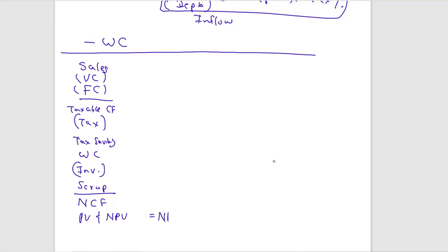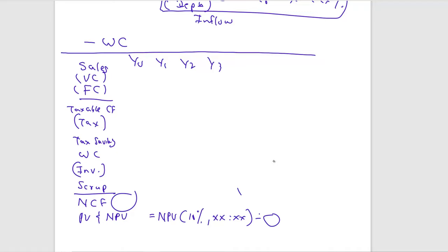To calculate NPV in Excel, use: =NPV(rate, cash flows from year one onwards), then finally adjust by adding the year zero cash flow separately. If year zero is already a negative value, add it (do not subtract again) to get the correct NPV.